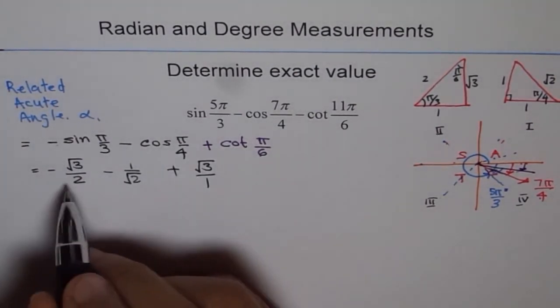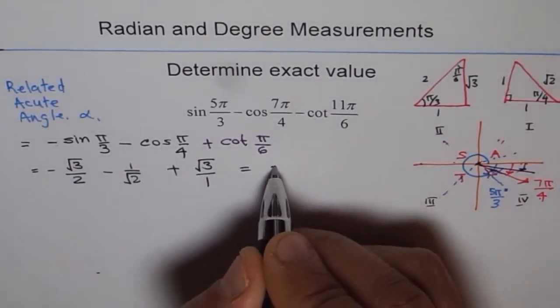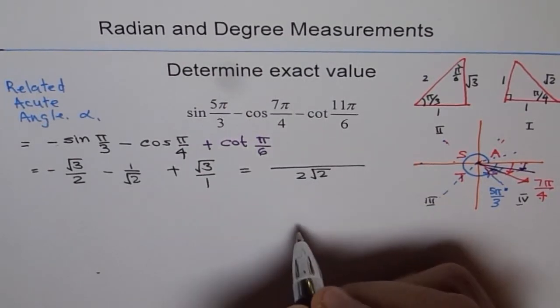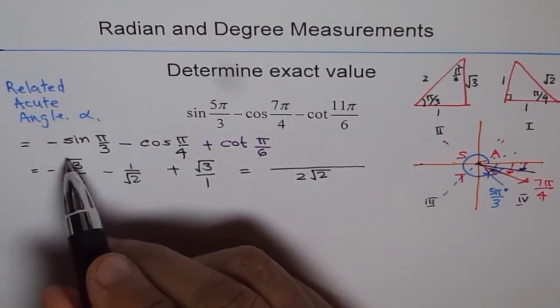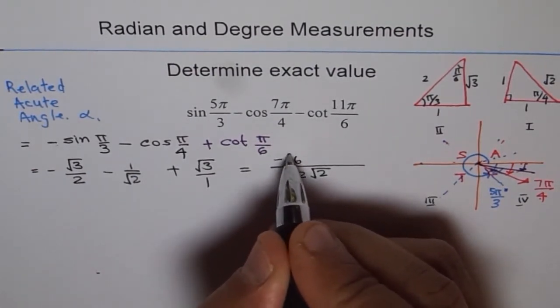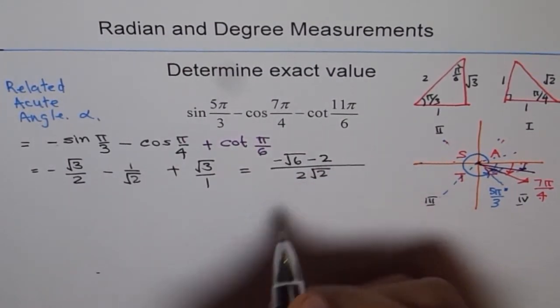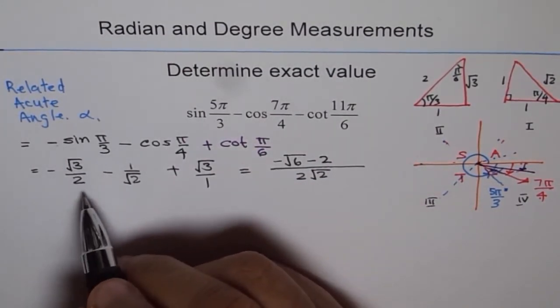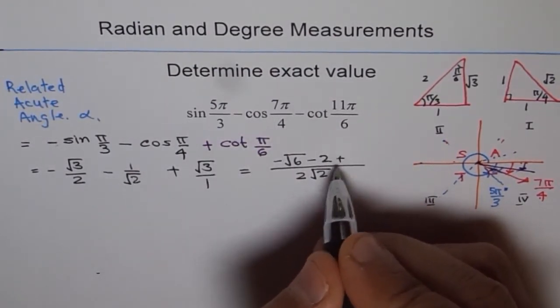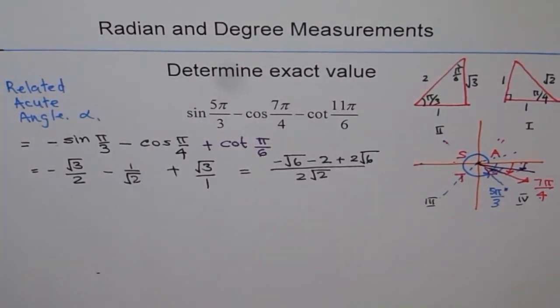To add these, my common denominator is 2 square root 2. So I will write here as 2 square root 2. Now, to make it 2 square root 2, I need to multiply this by square root 2, so I get minus square root 6. And here I need to multiply by 2, so I get minus 2. And here I need to multiply by 2 square root 2. So this becomes plus 2 times square root 6.